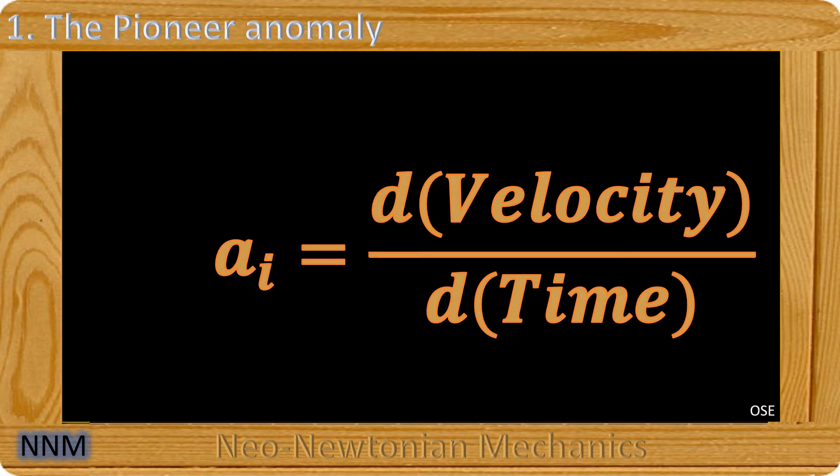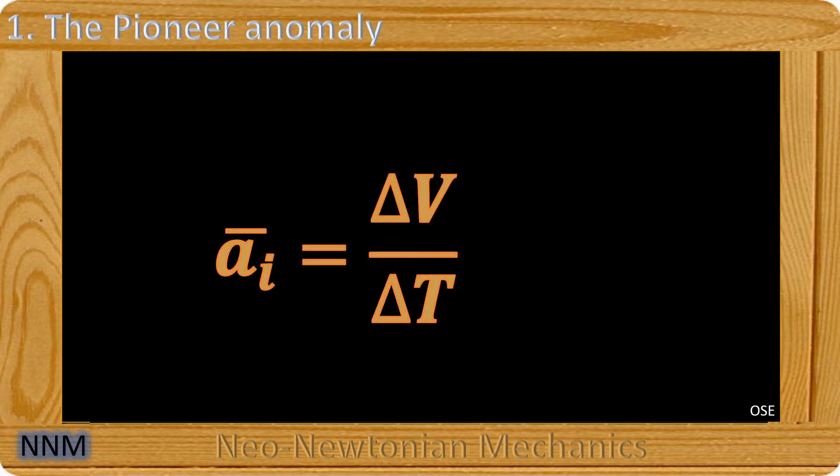By definition, an acceleration is the derivative with respect to time of the velocity. Let's call AI the acceleration, with I for inertial. In practice, as it is difficult to measure an instantaneous derivative, we measure the speed at two close instants, and we then obtain the average acceleration over this period of time.